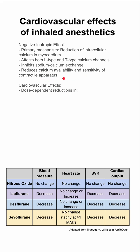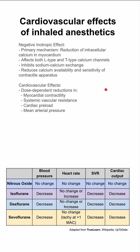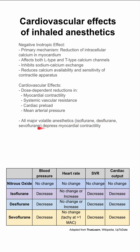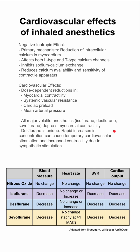Their cardiovascular effects are dose-dependent reductions in myocardial contractility, systemic vascular resistance, cardiac preload, and mean arterial pressure. All major volatile anesthetics — isoflurane, desflurane, and sevoflurane — depress myocardial contractility.